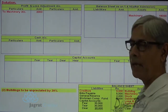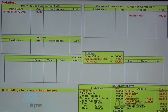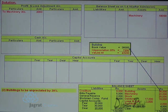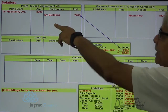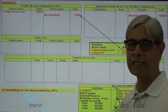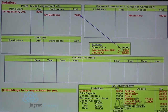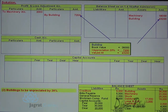Building is to be appreciated by 20%. The book value of building is ₹36,000, and 20% thereon is ₹7,200. This ₹7,200 increase in the value of building, being a gain, is recorded to the credit side of the profit and loss adjustment account. The new value of ₹43,200 will appear in the balance sheet after admission.